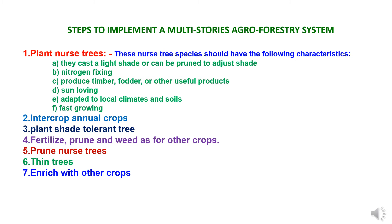Now, steps to implement a multi-storied agroforestry system. Step one: plant nursed trees. Fast growing, nitrogen-fixing trees can be planted first to improve site conditions. Nursed trees are valued for shade and soil enrichment throughout the life of the crop. These nursed tree species should cast a light shade or can be pruned to adjust shade, have nitrogen-fixing characteristics, produce timber, fodder and other useful products, be sun-loving with high evaporative demand, and be adapted to local climate and soil conditions with fast-growing nature.